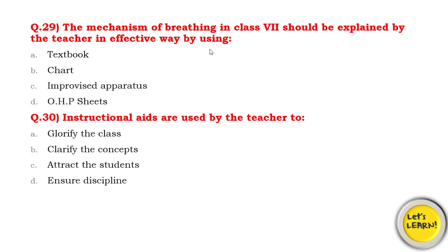Question number 29: The mechanism of breathing in class 7th should be explained by the teacher effectively by using — textbook, charts, improvised apparatus, or OHP sheets? OHP sheets are overhead projector sheets which are transparent. When we talk about breathing mechanism, the improvised apparatus is the best thing you can use to demonstrate it. So the C option — improvised apparatus — is the right answer.